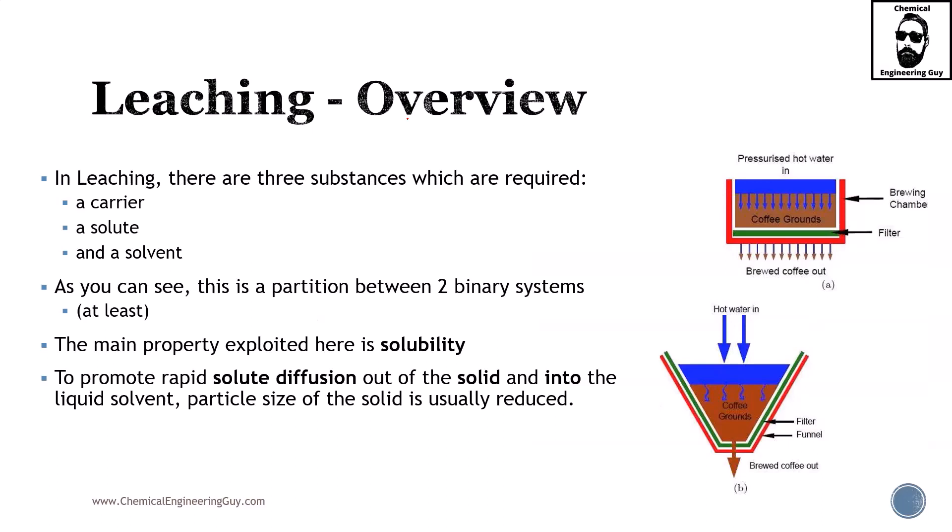In leaching there are three main substances to pay attention to: the carrier, which is the solid containing the material of interest; the solute, which is the material we want to remove — for coffee, that would be caffeine for example; and the solvent, which in the previous example is water. This is a partition system between two binary systems — the solute is either staying in the carrier (solid phase) or going into the solvent. The main property exploited here is solubility.